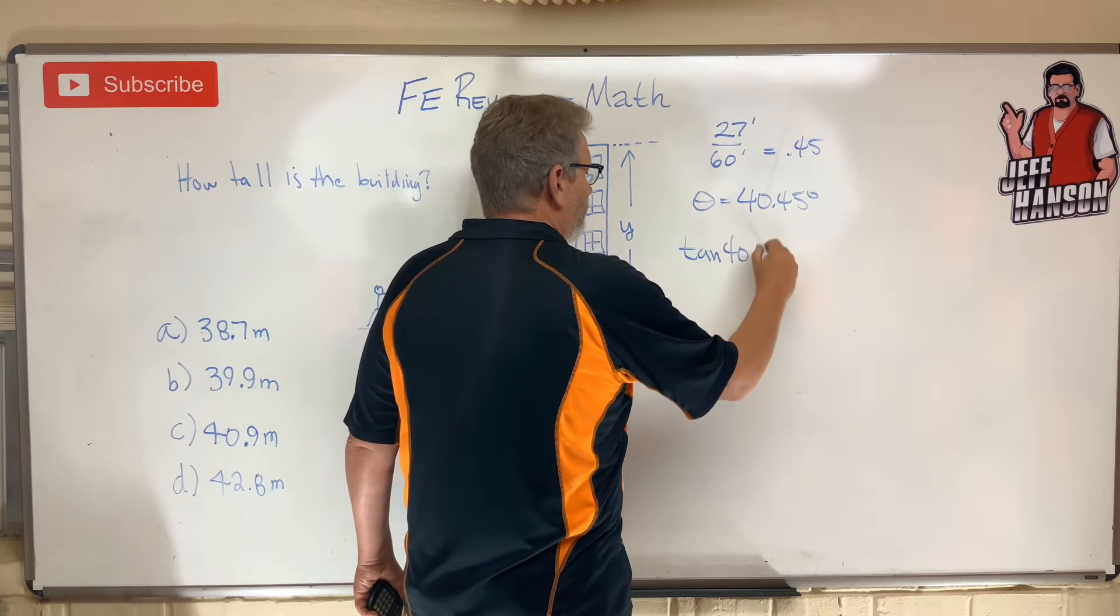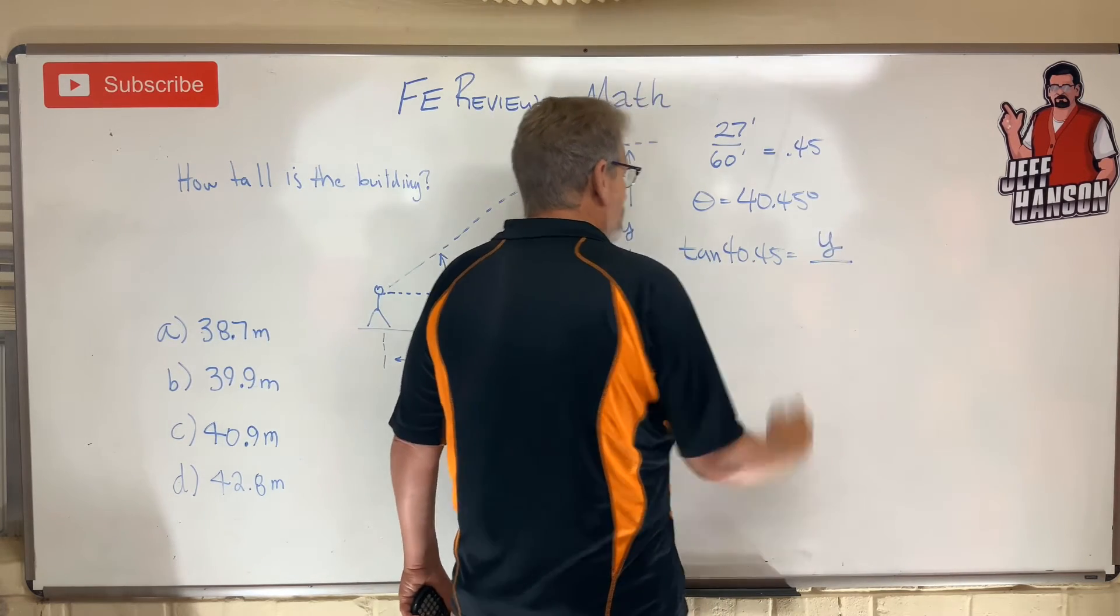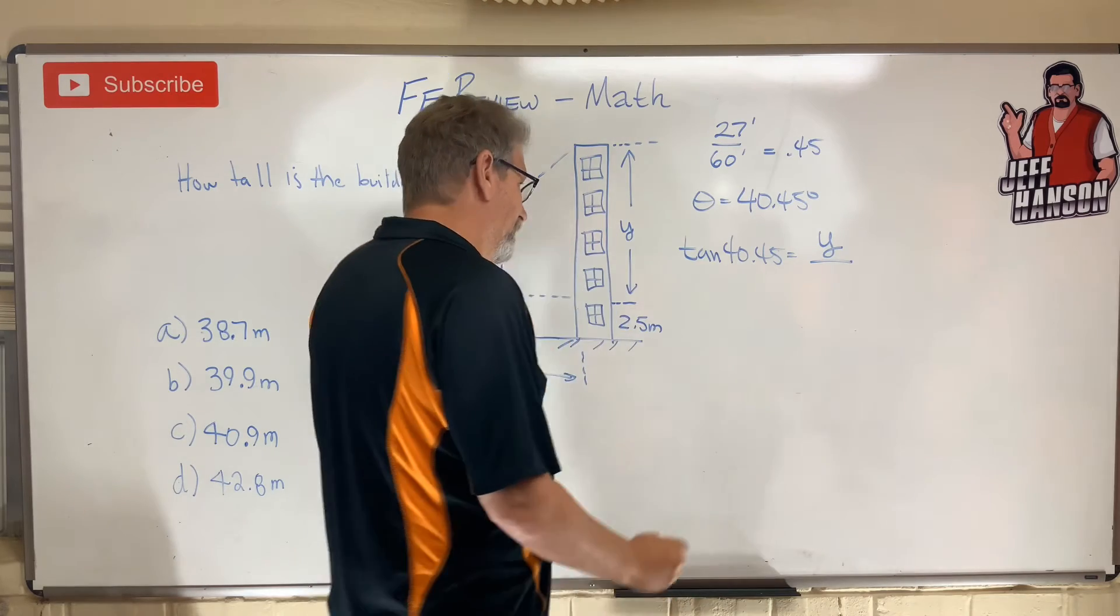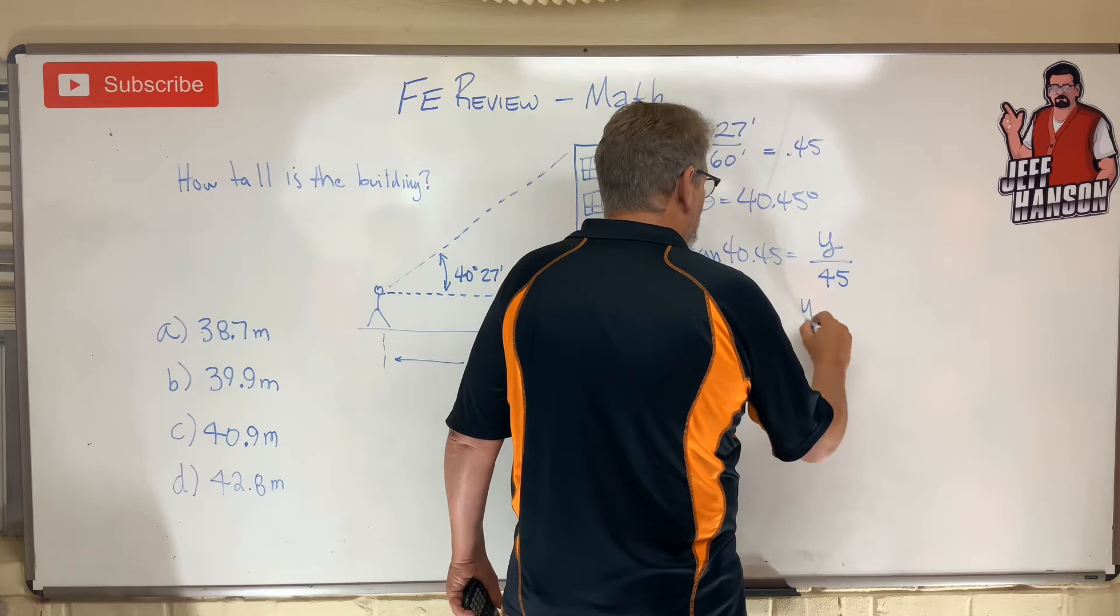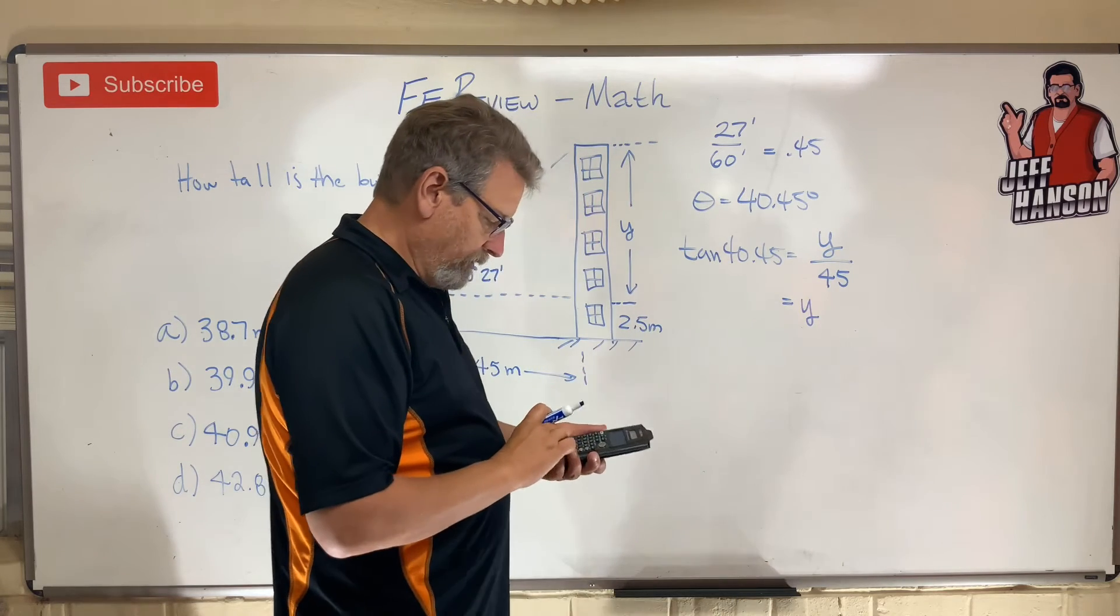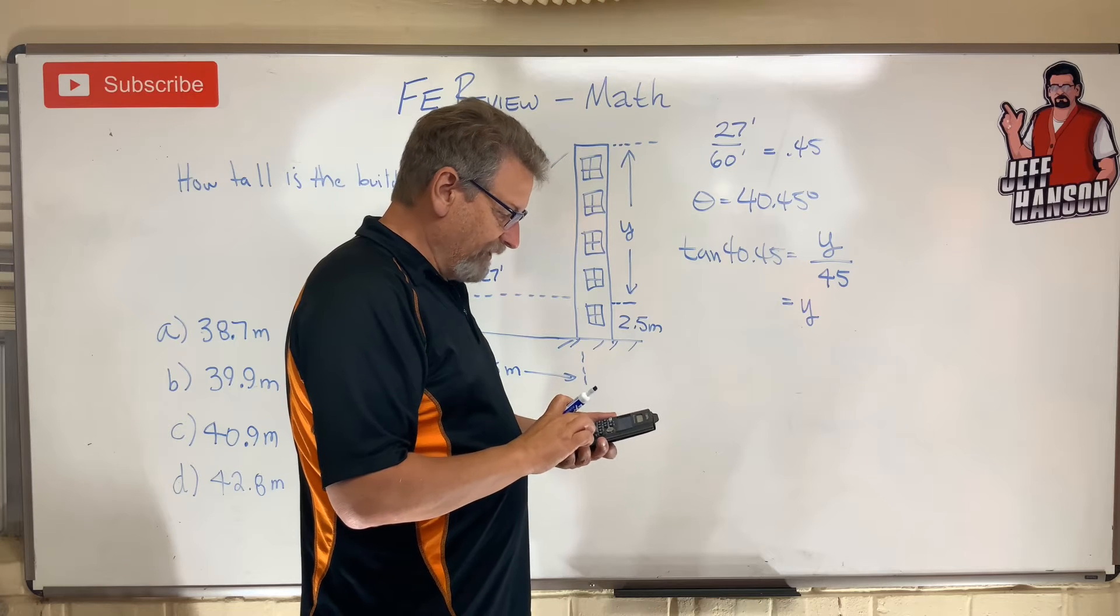Tangent of 40.45 is equal to opposite y over adjacent 45. So y must be equal to... okay, clear, tangent...